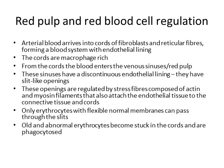With regards to the red pulp, we've got arterial blood arriving into connective tissue that forms cords of fibroblasts and reticular fibers, which form a blood system in and of itself. These cords are macrophage-rich. Blood goes from the arterial blood into the cord endothelial system, and then enters into the venous sinuses, or the red pulp.